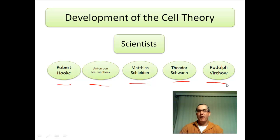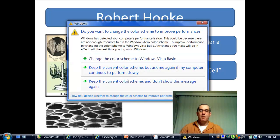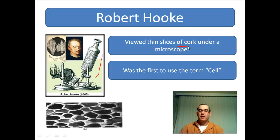There were many other scientists that played a part in the development of the cell theory, but these are the five main scientists we want you to know for this class. Robert Hooke had a very primitive microscope — you can see what it looks like on this side, much different from the ones we use in biology class today. He was looking at a slice of cork, and what he ended up viewing were these rectangular box-shaped compartments.